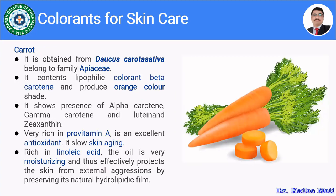Carrots were already discussed previously; however, they are also being used as a coloring agent. Carrots are obtained from Daucus carota subspecies belonging to family Apiaceae. They contain lipophilic colorant beta-carotene and produce the orange color shade. They also show the presence of alpha-carotene, gamma-carotene, lutein and zeaxanthin. Carrot is rich in pro-vitamin A, is an excellent antioxidant and anti-aging agent, rich in linoleic acid, and the oil is very moisturizing, effectively protecting the skin from external aggressions by preserving its natural hydrolipidic film.